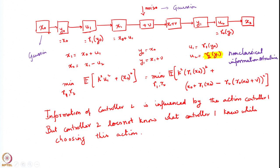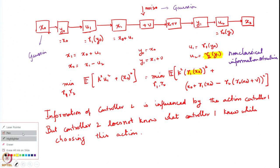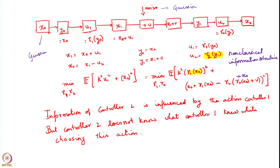If you write out the cost function explicitly as a function of γ1 and γ2, you see that u1 is substituted in terms of γ1, giving one term. Then u2 is substituted as a function of y1 = x1 + v, but x1 itself is x0 + γ1(x0). The resulting state x2 = x1 − u2 then generates the cost term. So the full cost is expressed in terms of both policy functions.